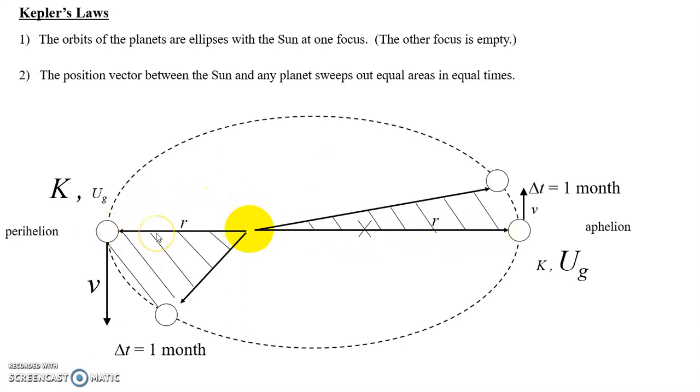which we then paired with the idea of kinetic energy being large over here and small over here. And then the distance here is small, and the distance here is large. And then we talk about gravitational potential energy in the system,